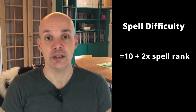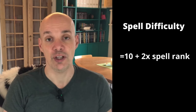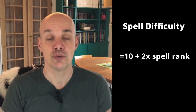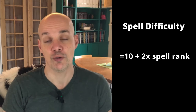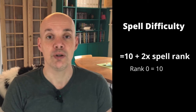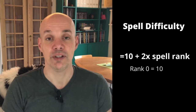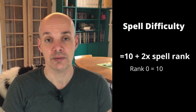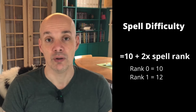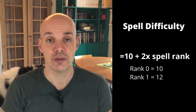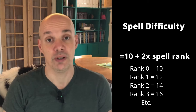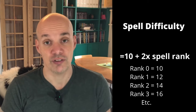The spell difficulty of a spell is 10 plus 2 times the spell rank. Thus a rank 0 spell has a spell difficulty of 10, a rank 1 spell of 12, a rank 3 spell of 16, and so forth.